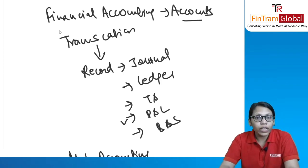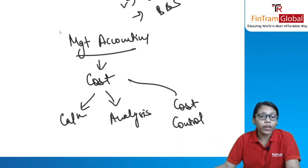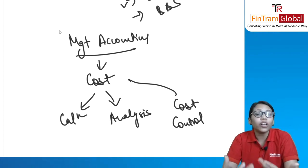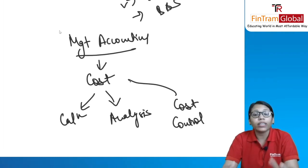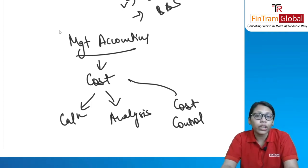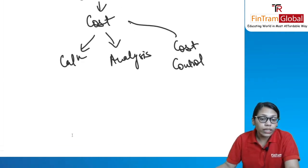Financial accounting data is used by the organization itself, shareholders, government, and banks — these are external users. Management accounting data is only of interest to the management of that particular organization, because it is about cost. That's why it is called management accounting — the management of the organization is the one interested in the cost data.